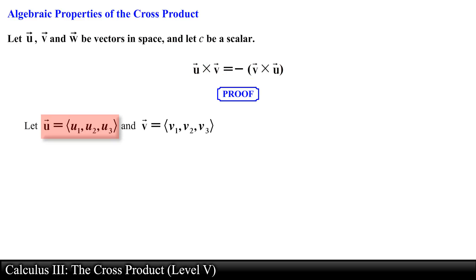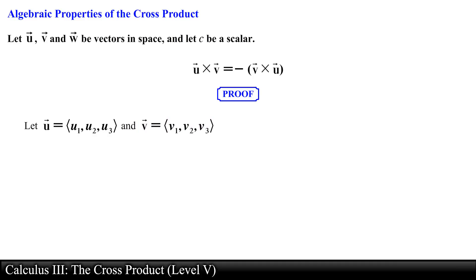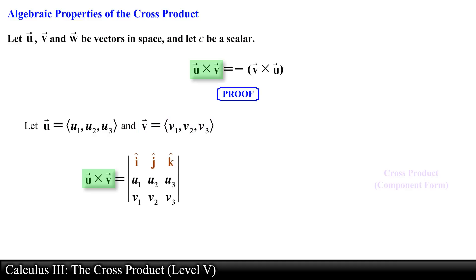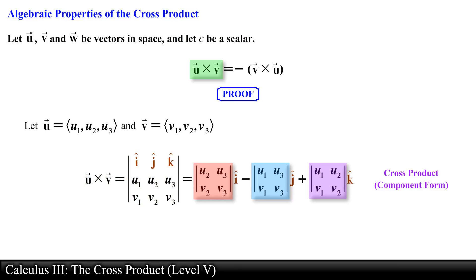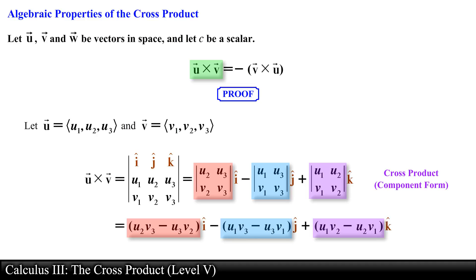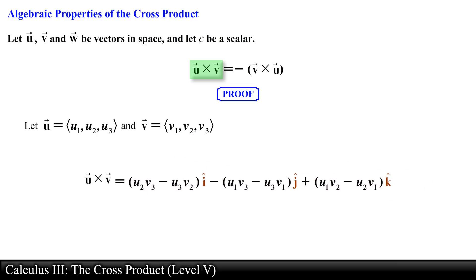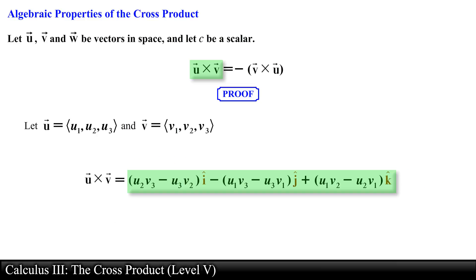We let vector u equal the following components and vector v equal the following components. Then by using the component definition of the cross product we set up our determinant and find the minors of the matrix. We then find an expression for the determinant of each 2×2 matrix. Simplifying, we obtain the following expression for the cross product between vector u and vector v.